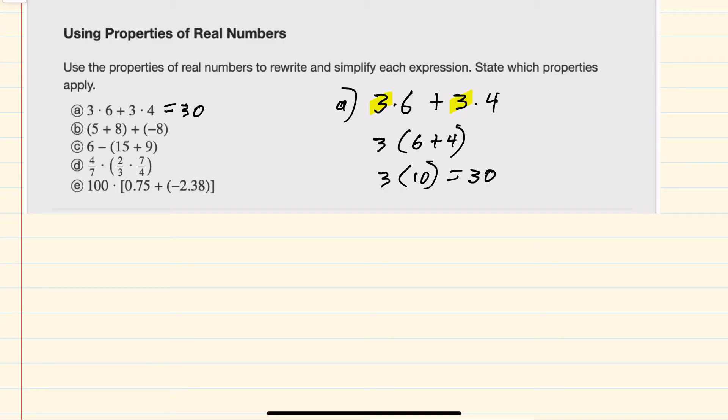And then for the second, we have addition. So 5 plus 8 plus a negative 8. Here we're grouping the first two together, but the associative property says that I could group the second two together and keep that as addition.